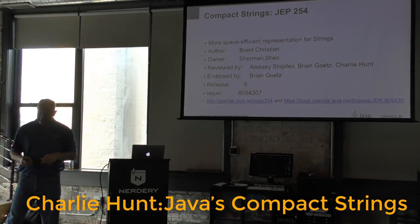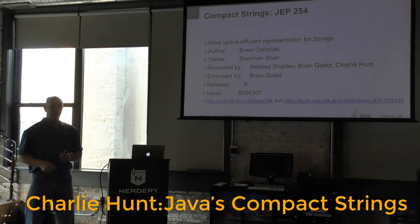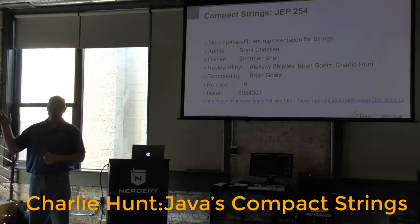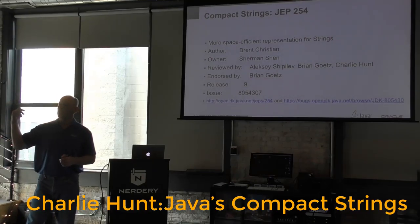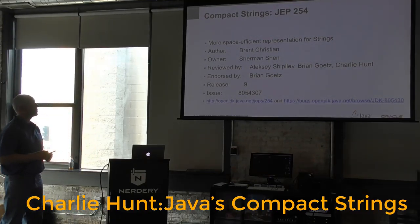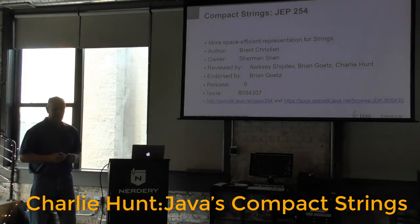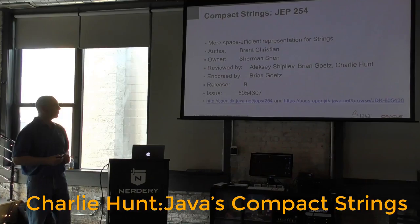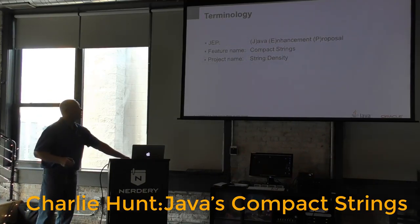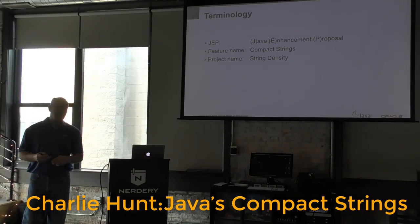Compact Strings was JEP 254. JEP stands for Java Enhancement Proposal. If I jump ahead one slide, you can see the acronym. This is the structure used to propose enhancements to Java or the JVM.